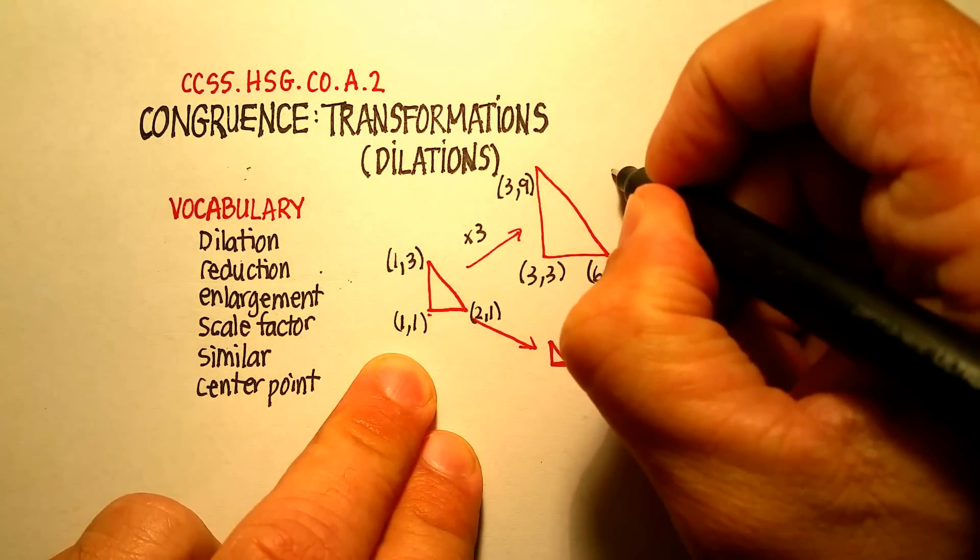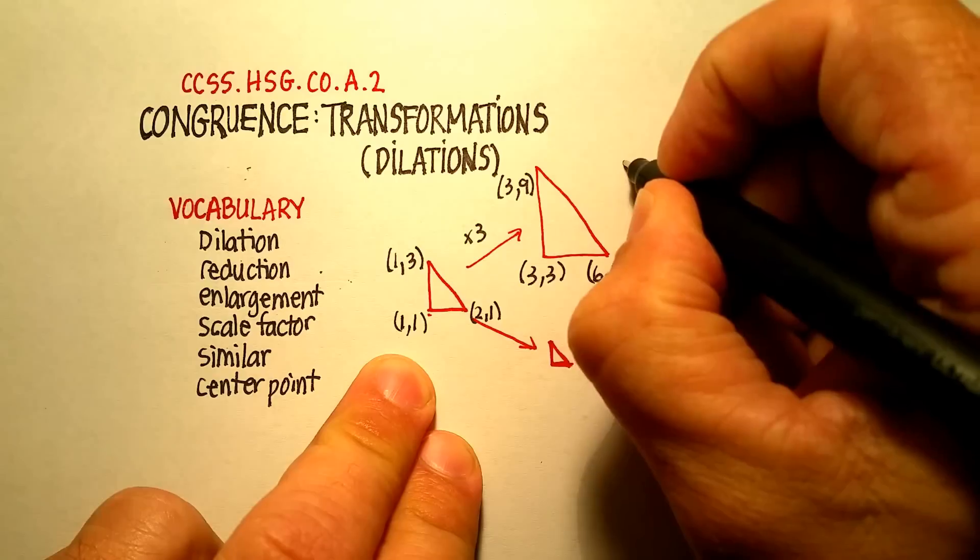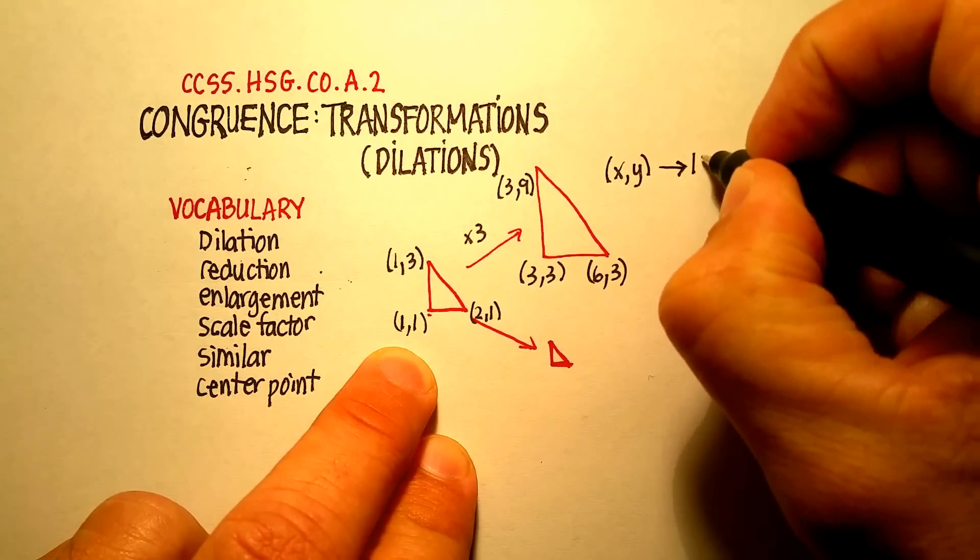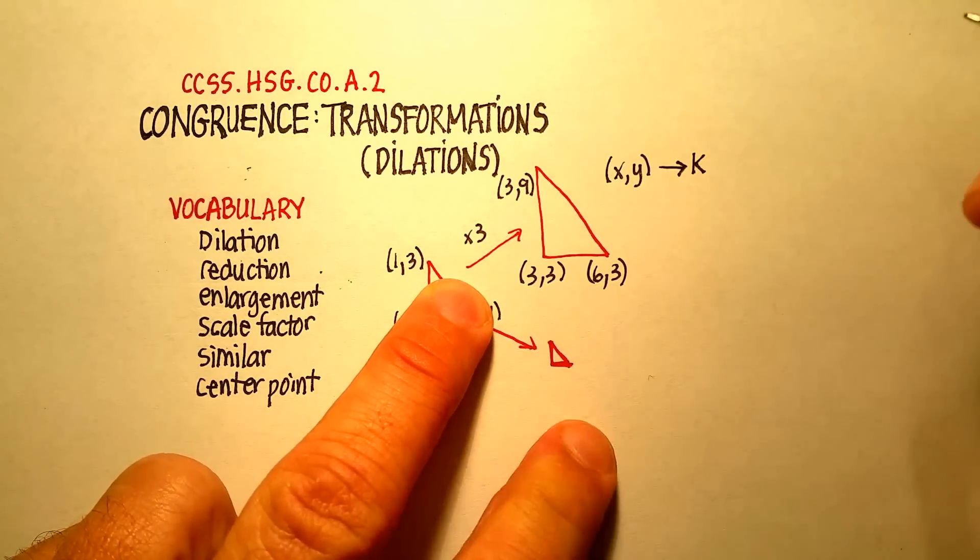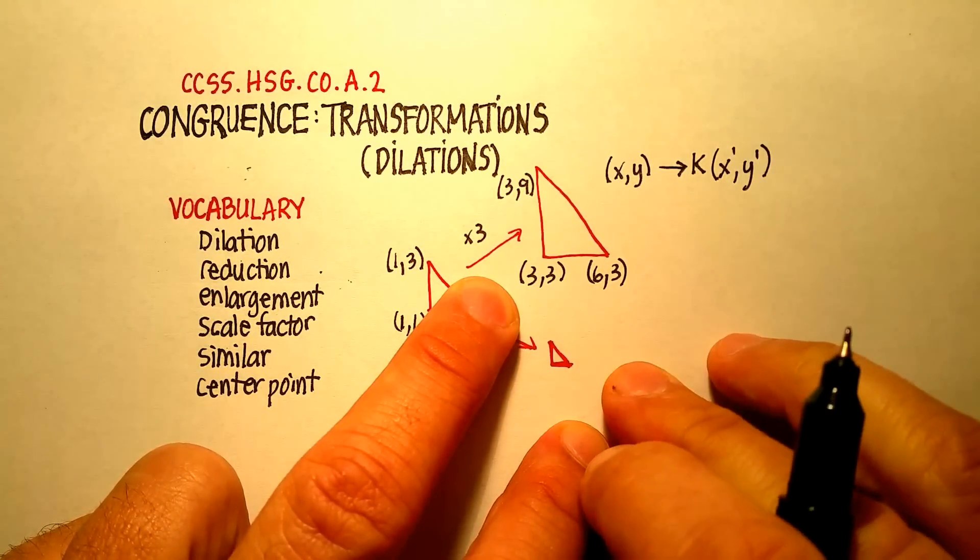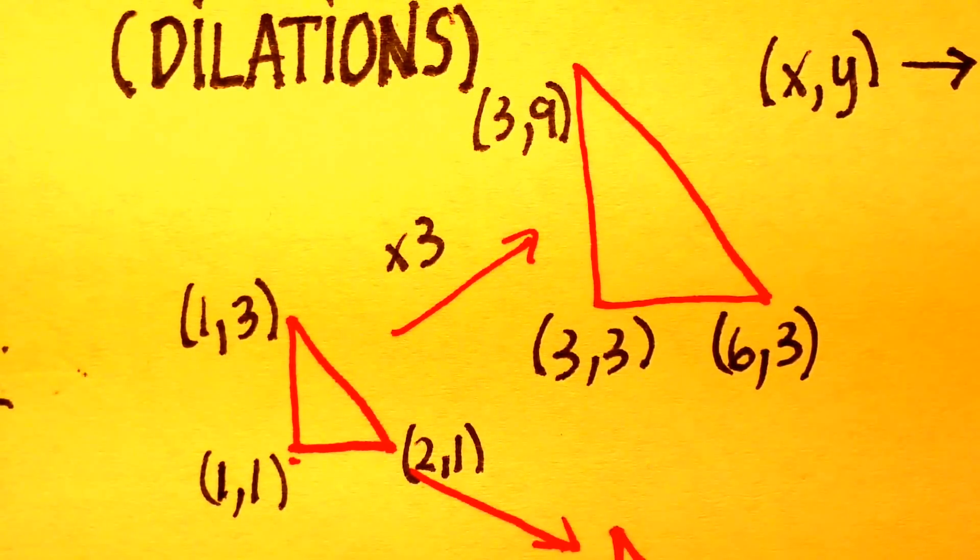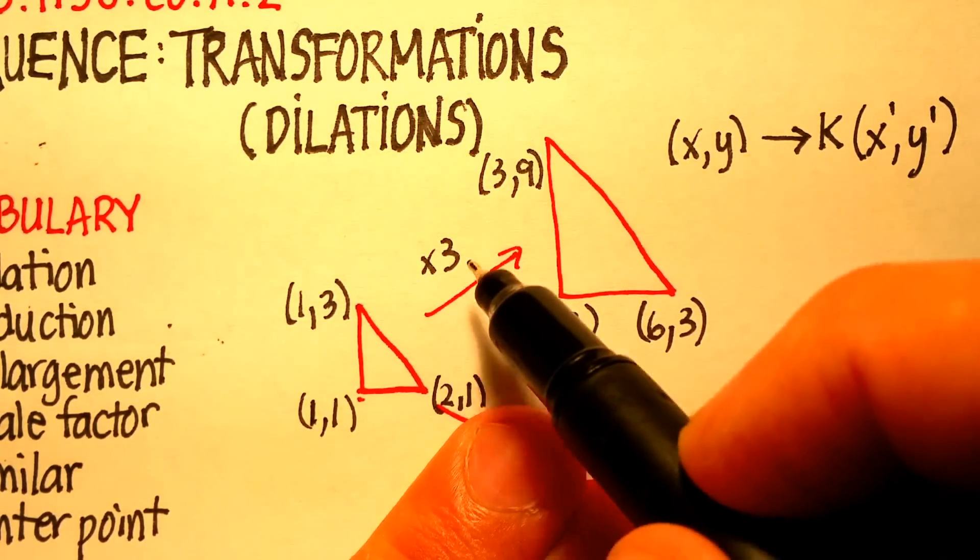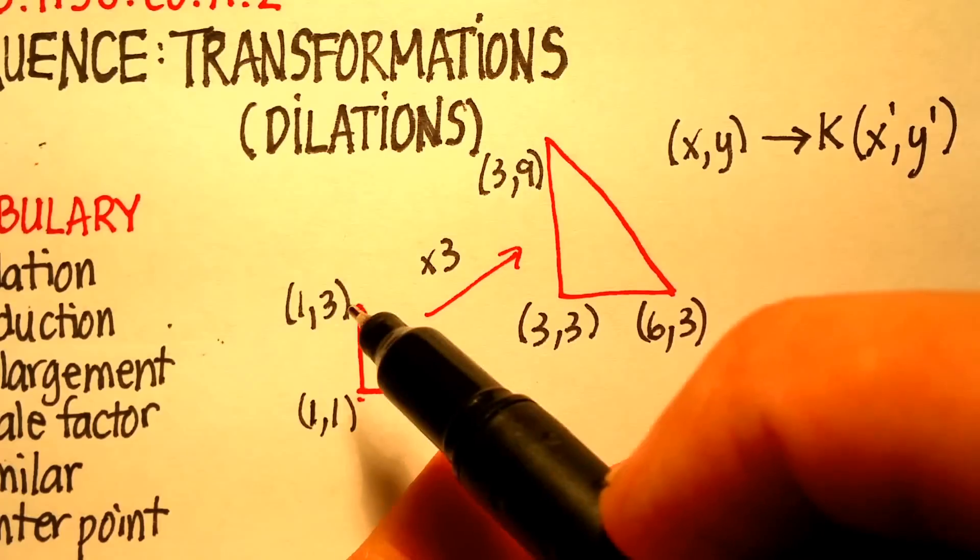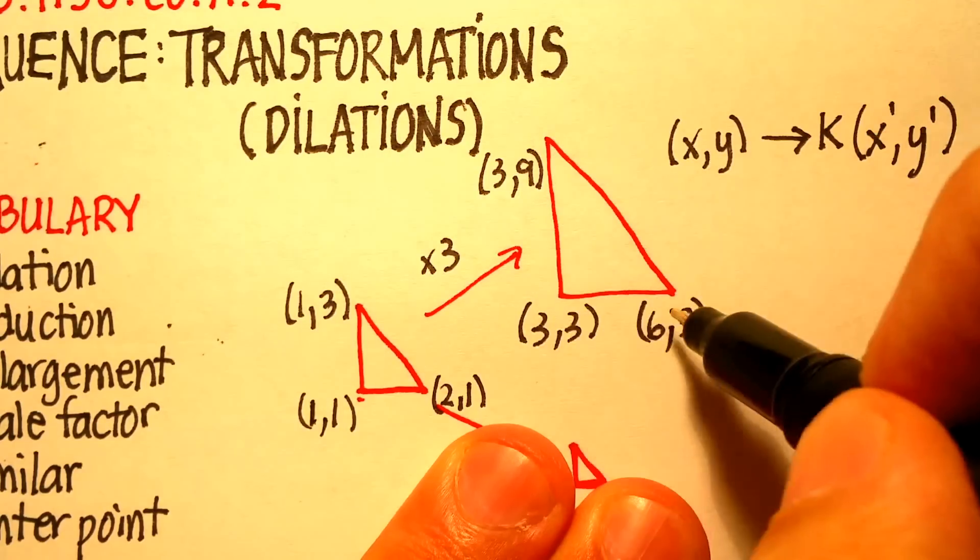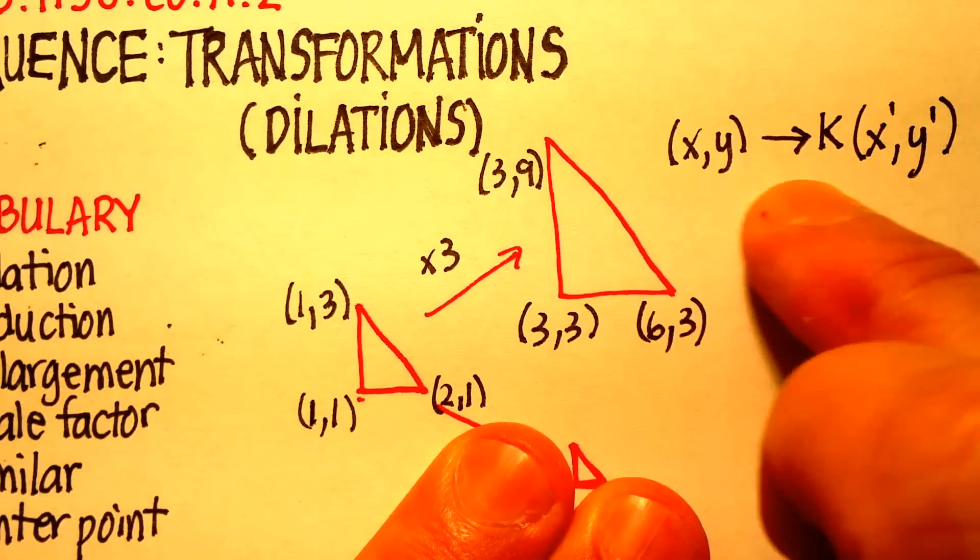And you represent that by writing it like this: (x,y), the original x, y's, are multiplied by some kind of a scale factor, which is called k, to become your new location. Now let me just kind of zero in on that just a little bit more. So notice what I did. I have my original vertices. I have my scale factor, which we call k. I multiplied each one of the different points in the coordinate, and that's how I would get where the new coordinates would be. And you would represent it by doing it like this.